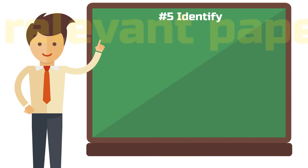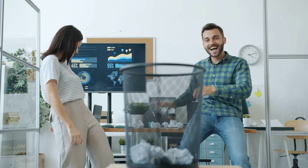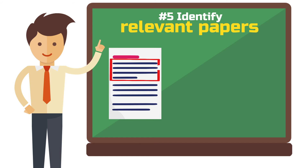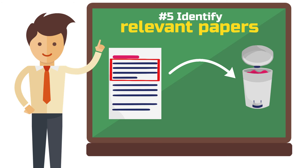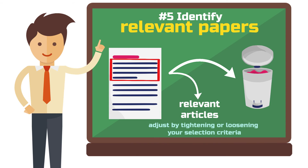Step 5: Identify relevant papers. After conducting a systematic literature search and narrowing down the selection of articles, you need to identify those that are most relevant to your topic and research question. You can do this by, for example, reading the abstracts of all the papers and eliminating those that don't quite fit the topic. What remains is a reasonable number of relevant articles that you should read in detail and include in your analysis. The number of papers cannot really be predicted because you need to consider all the results that you get — by tightening or loosening your selection criteria, you can vary the number of relevant articles.